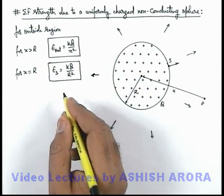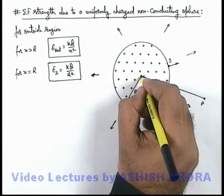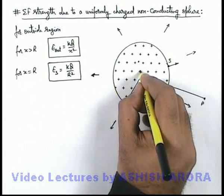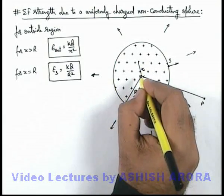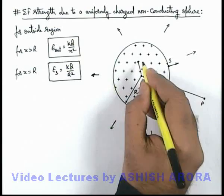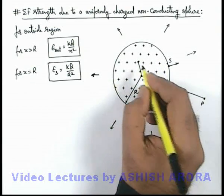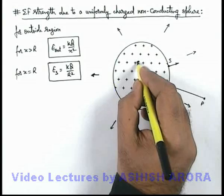If we wish to find out the electric field at an interior point at a distance x, then at this point we can say that unlike the case of a conducting or hollow sphere, this will not be zero.